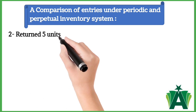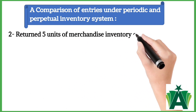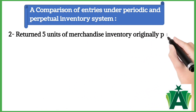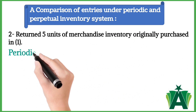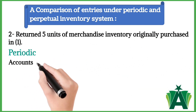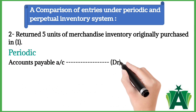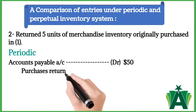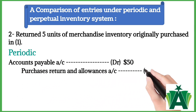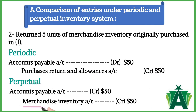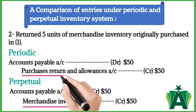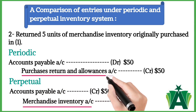Transaction 2: returned 5 units of merchandise inventory originally purchased in Transaction 1. Periodic system journal entry will be: Accounts Payable debit $50, Purchases Returns and Allowances account credit with the same amount. The perpetual system credits the cost of purchase returns directly to the Merchandise Inventory account, instead of using a Purchase Returns and Allowances account.